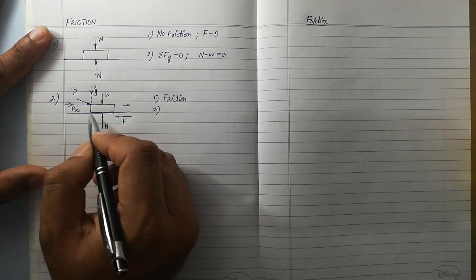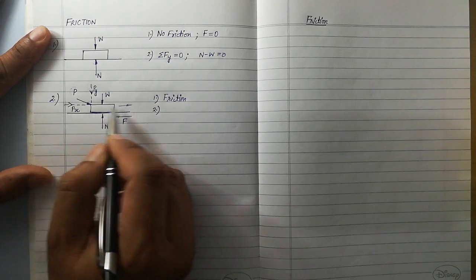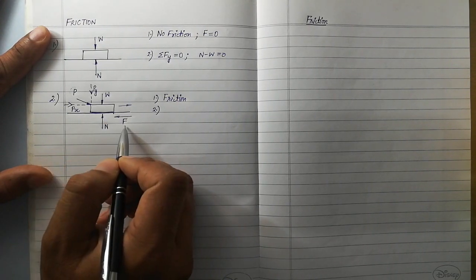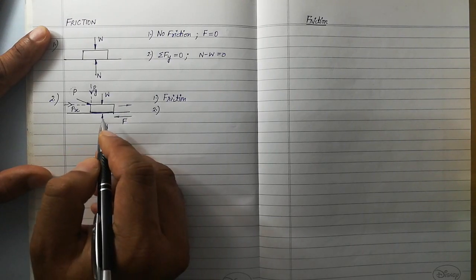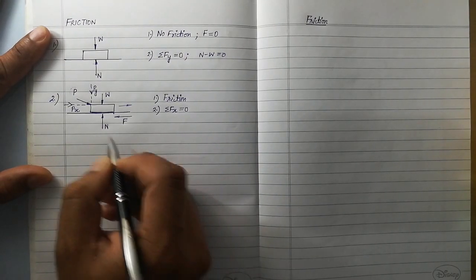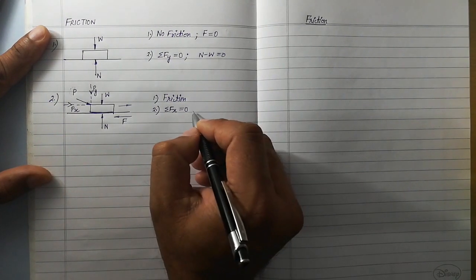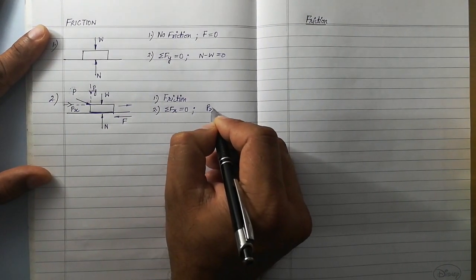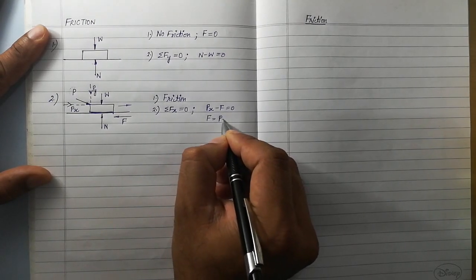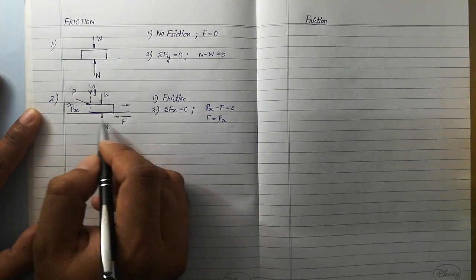The body is not moving along the horizontal (x) direction. So how many forces are acting along the horizontal direction? One is Px and another is F. Since the body is not moving, the sum of all forces along the x direction must be equal to 0. Any force acting towards the right we consider positive and towards the left we consider negative. From this equation we get that F (friction force) is equal to Px.